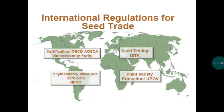When exporting material, it must be protected, because once others receive the material they could multiply and distribute it without further payment. When material is protected, production and distribution rights remain with you, and anyone interested in further producing and distributing must pay royalties. The agency related to plant variety protection internationally is UPOV, and India's equivalent authority is PPVFRA. To summarize: OECD and AOSCA handle certification, ISTA handles seed testing and quality certificates, phytosanitary measures deal with pest and disease freedom, and UPOV/PPVFRA handle varietal protection.